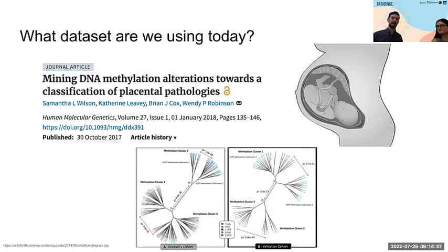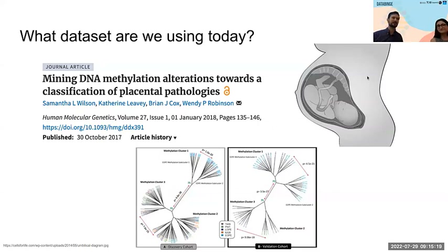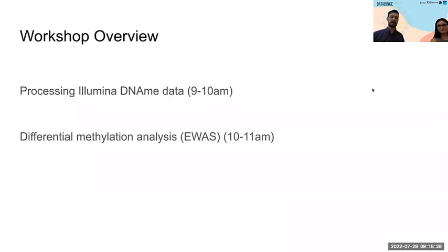By 'fetally derived,' I mean: the sperm and egg create a zygote, and all cells that contribute to the baby come from that zygote — but so do all the cells that contribute to the placenta. None of the placental cells are maternal in origin. They have the same sex chromosome complement as the baby. So it's all fetal tissue, genetically the same as the rest of the fetus.